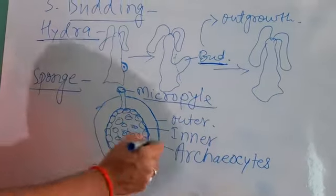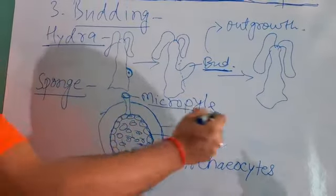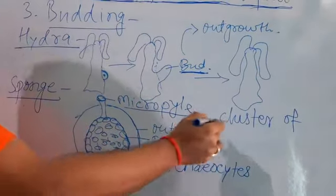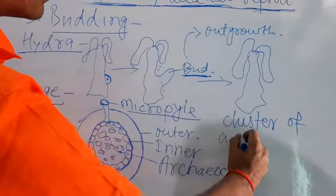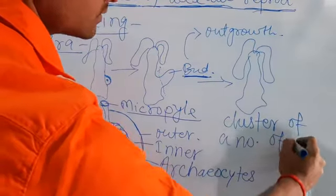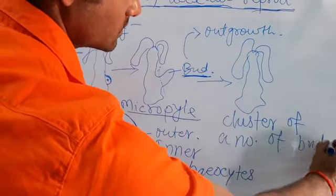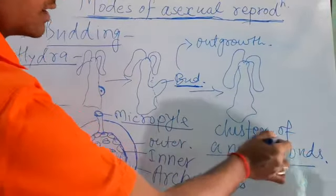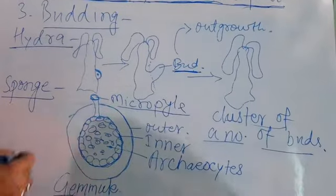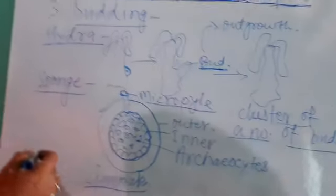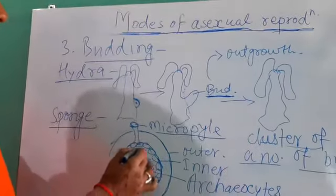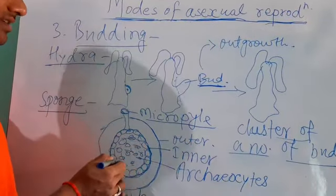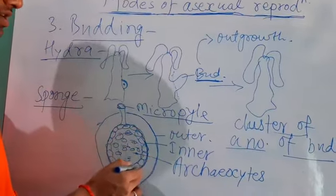What is a gemmule? Gemmule is a cluster of a number of buds. This is a number of buds found in the sponge. Here archeocytes, these cells are undifferentiated cells and protected through the inner membrane of the sponge.